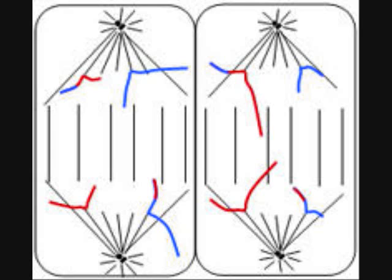In anaphase 2, the breakdown of proteins holding the sister chromatids together at the centromere allows the chromatids to separate. The chromatids move toward opposite poles as individual chromosomes.